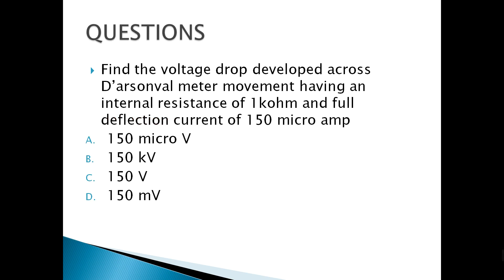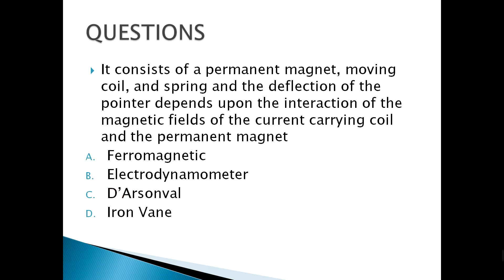Next, find the voltage drop developed across a D'Arsonval meter movement having an internal resistance of 1 kilo-ohm and full deflection current of 150 microamperes. It's as easy as Ohm's Law — we just multiply resistance and current: 1 kilo-ohm times 150 microamperes gives letter D, 150 millivolts.